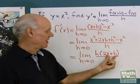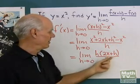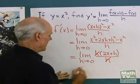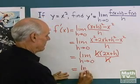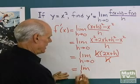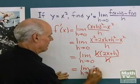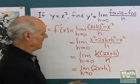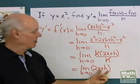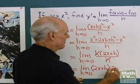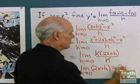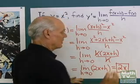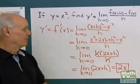I factor that outside. I have 2x plus h left here. Now I can divide out those h's, and I end up with the limit as h goes to 0 of 2x plus h, and now as h goes to 0, this expression right here goes to 2x. So there's my derivative of y equals x squared using the definition of the derivative.